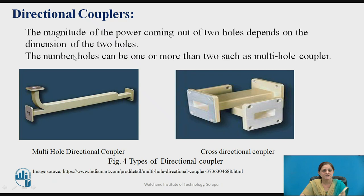Directional couplers can also have two holes or multiple holes. Depending on the number of holes, there are different types of directional couplers as shown in the figure. The first figure shows the multi-hole directional coupler, whereas the second figure shows the cross directional coupler. The magnitude of the power coming out of the two holes depends on the dimensions of the holes.